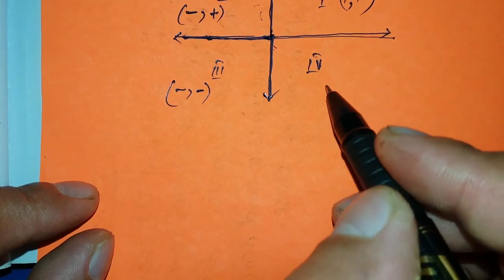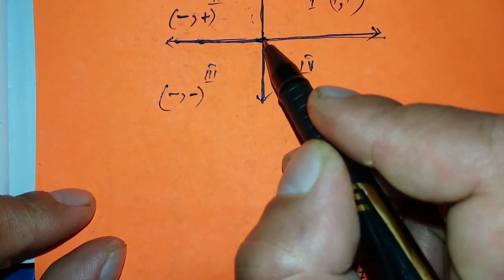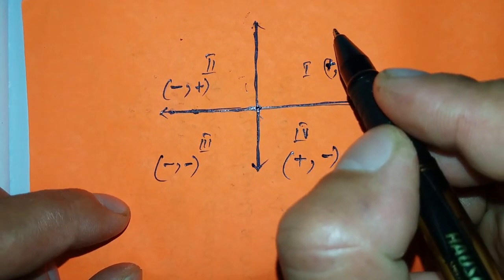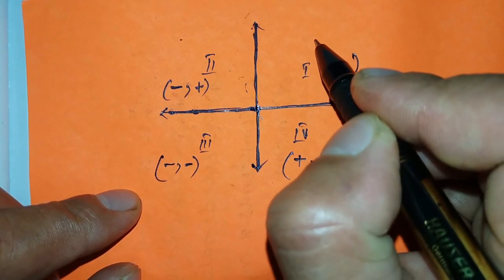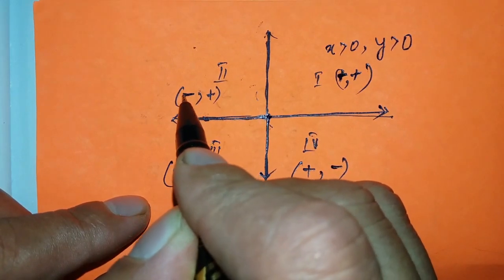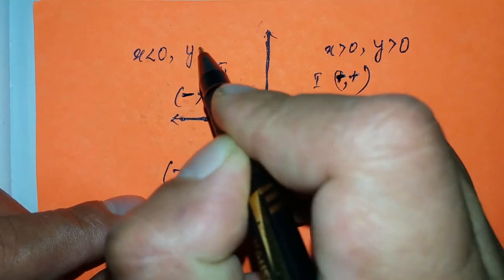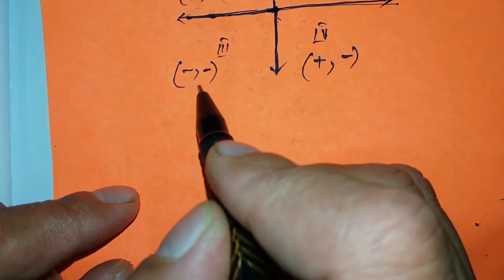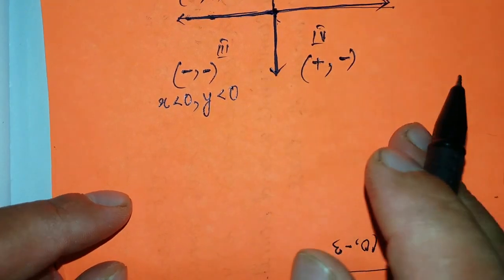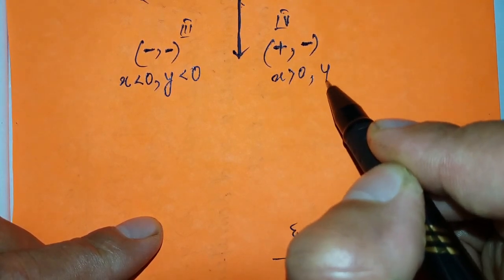Fourth quadrant: x is positive (right of origin), y is negative (below origin). When a number is positive it means it's greater than zero, and when negative it's less than zero. So: first quadrant — x > 0, y > 0; second quadrant — x < 0, y > 0; third quadrant — x < 0, y < 0; fourth quadrant — x > 0, y < 0.